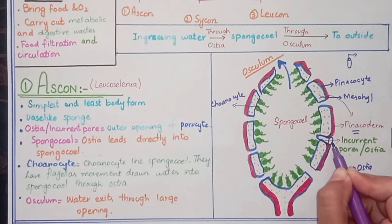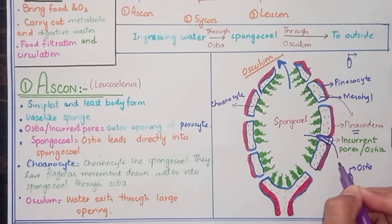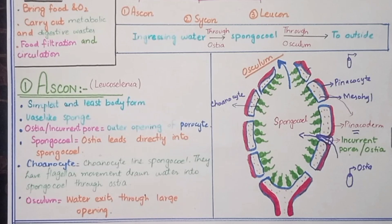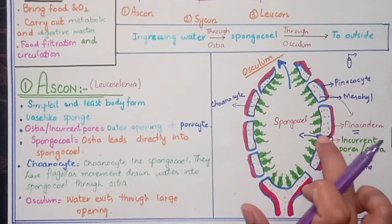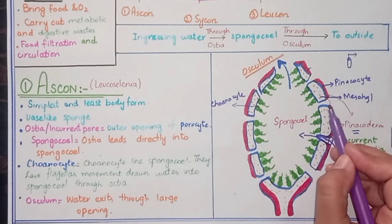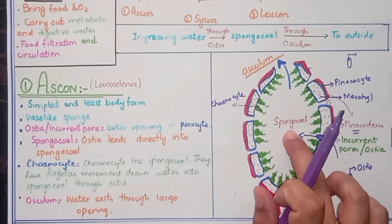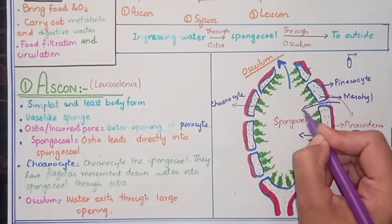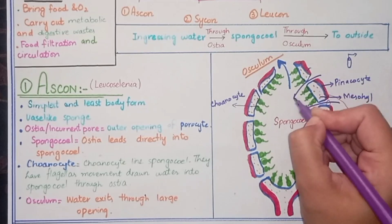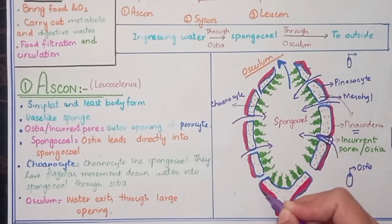Water enters through the Ostea (incurrent pores) inside the Spongocoel. So ingressive water means water entering through the Ostea into the Spongocoel.